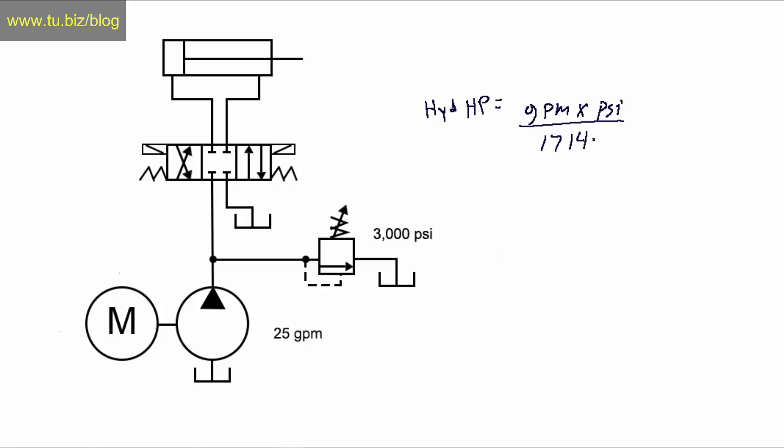But for this one, we're going to replace 25 GPM. We have GPM 25, so you have 25 times the PSI 3000 PSI, and you divide it by 1714.